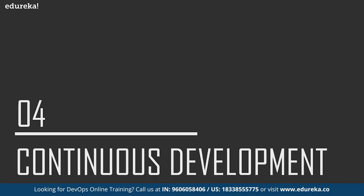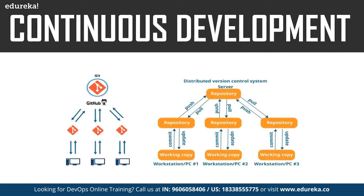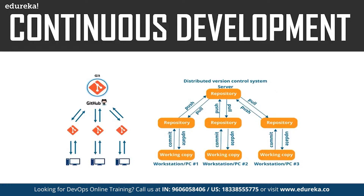The first phase of the DevOps lifecycle is continuous development. This phase involves planning and coding of the software application's functionality. There are no tools for planning as such, but there are a number of tools for maintaining the code. The vision of the project is decided during the planning phase, and then the actual coding begins. The code can be written in any language but is maintained using version control tools. These are the continuous development DevOps tools.